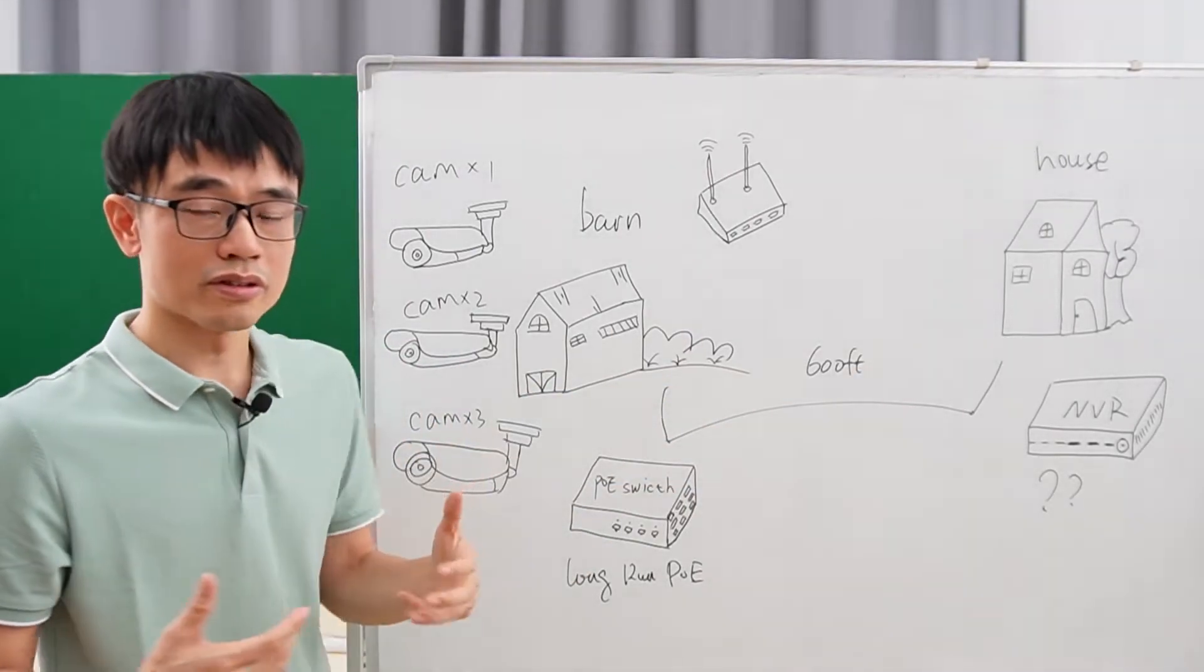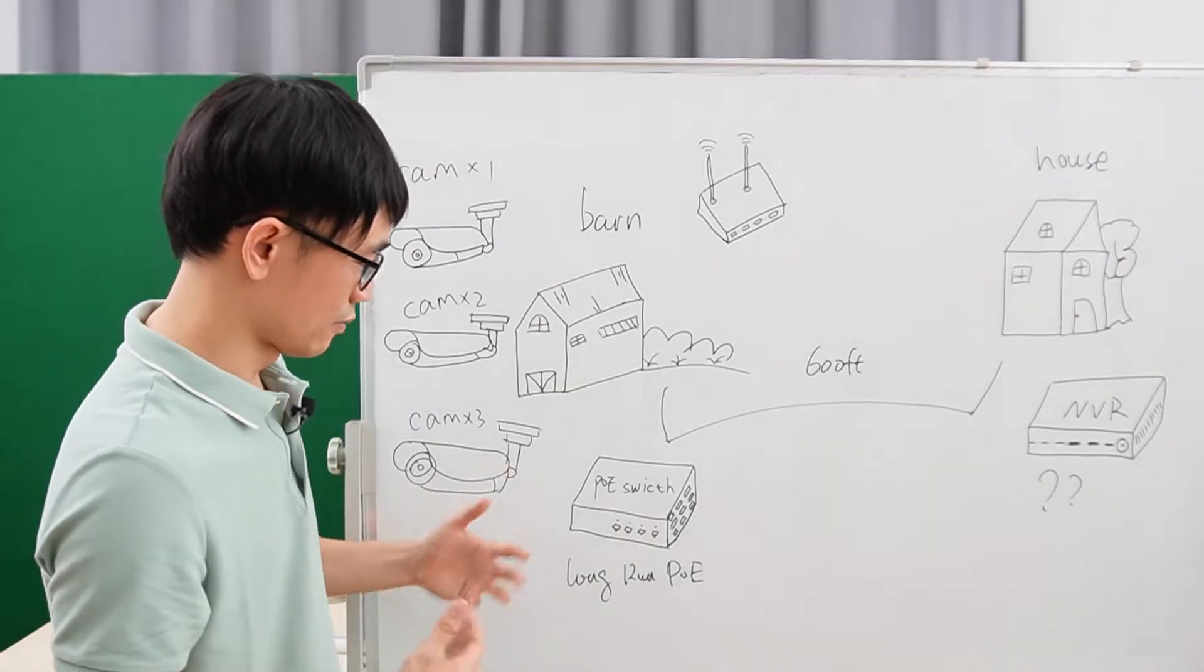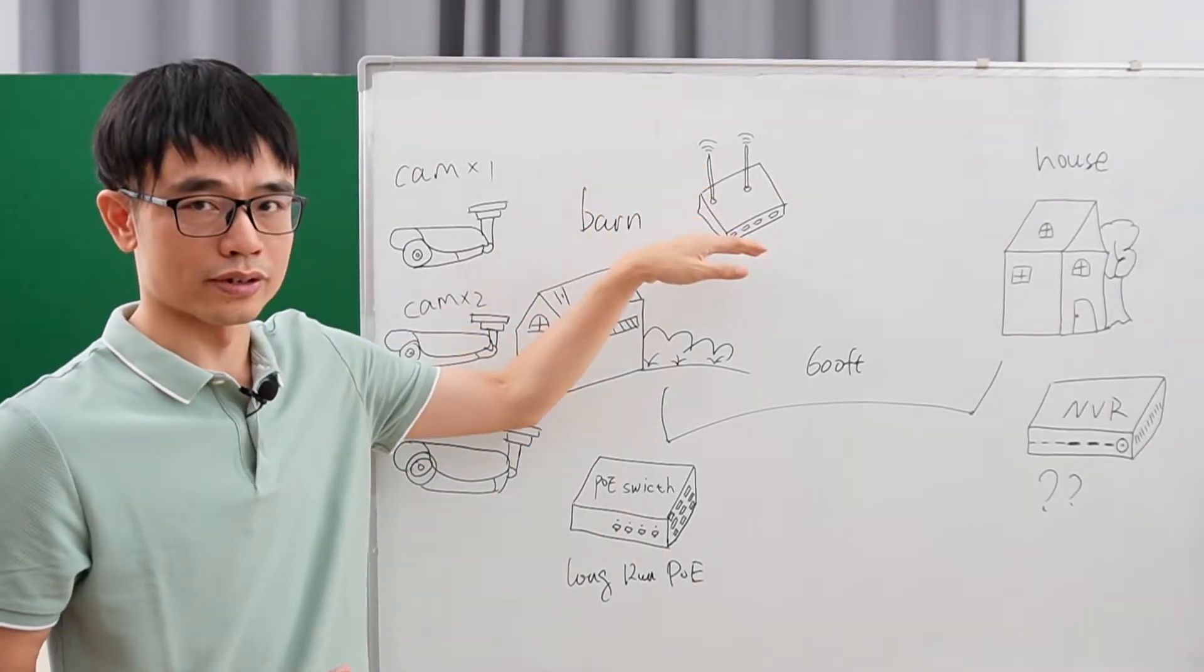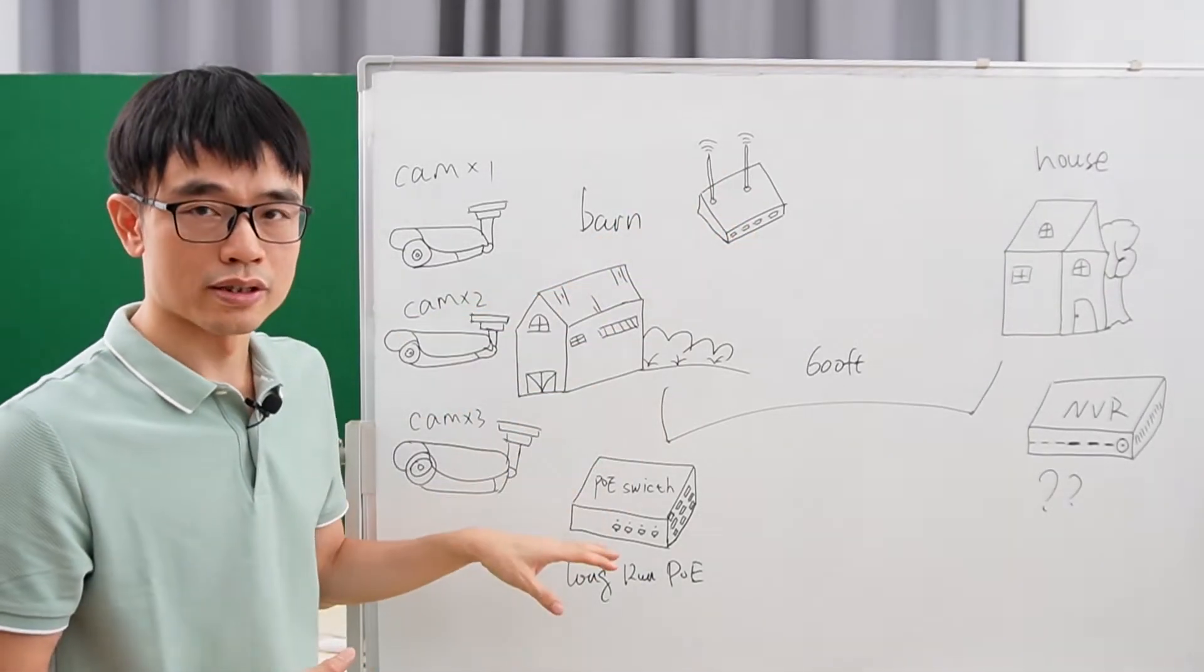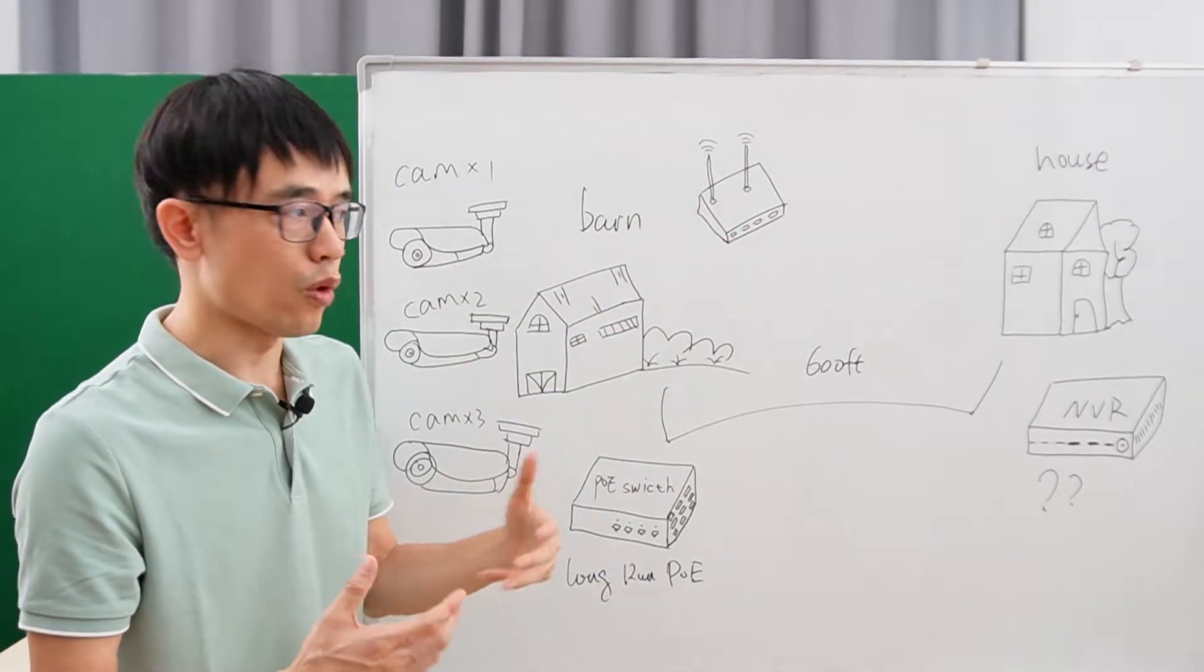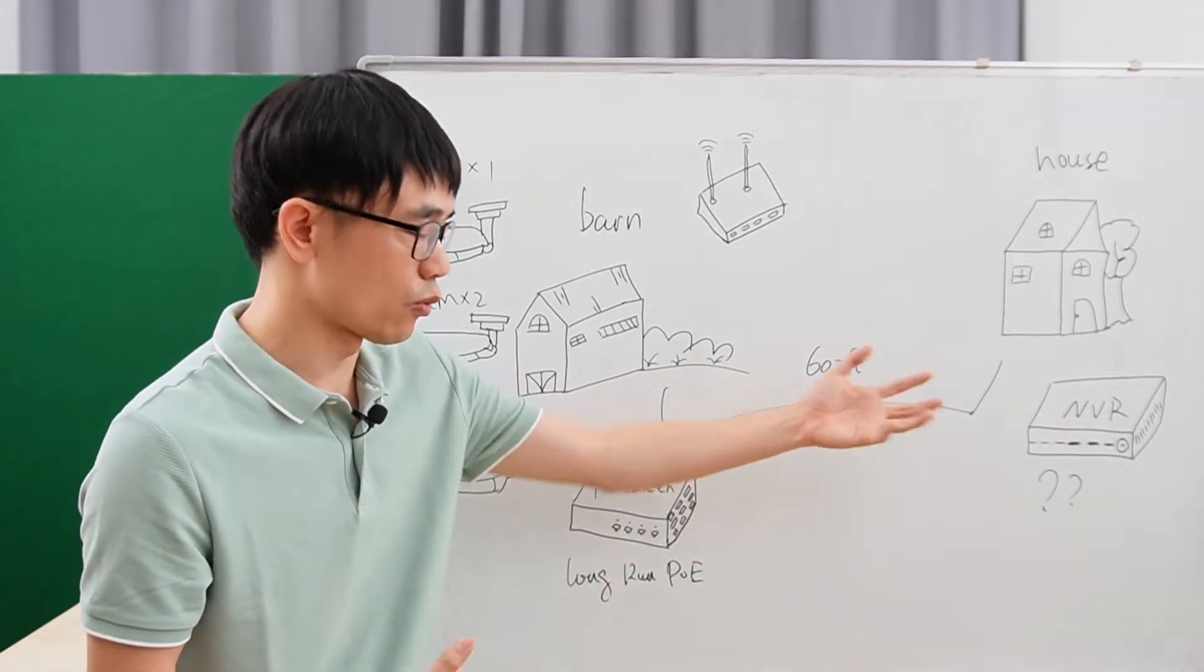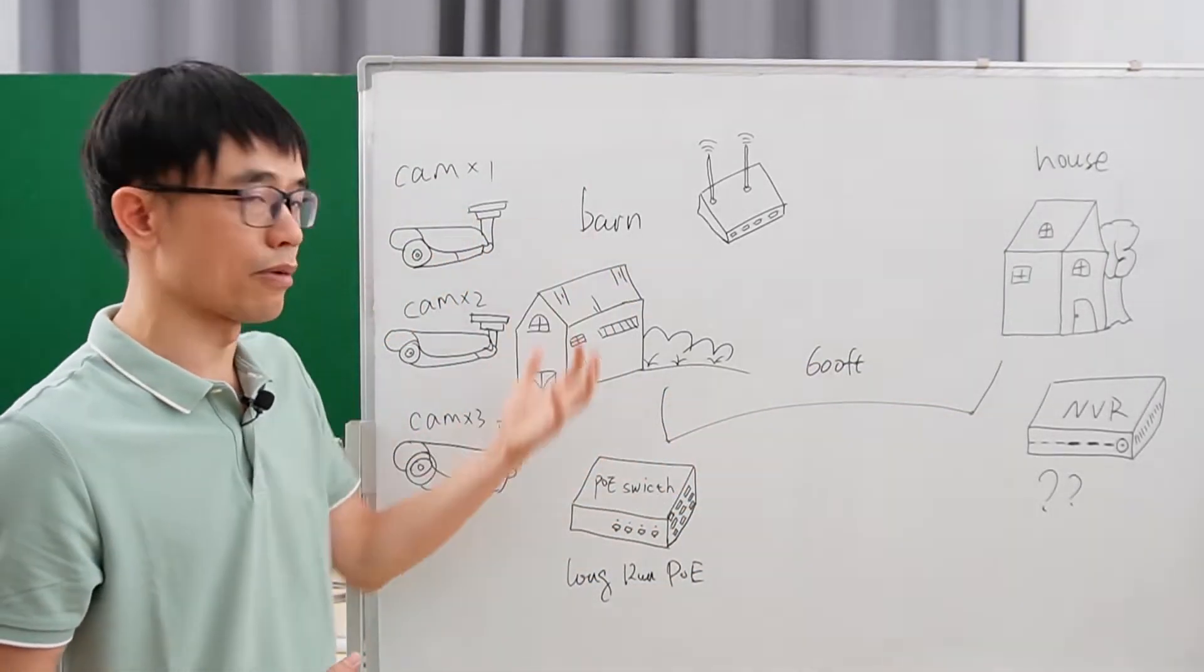Now we have a new requirement from the owner. He has an access point and would like to connect it to the switch, so he has the wire connection for data using the wire connection from the house and supply Wi-Fi at the barn.